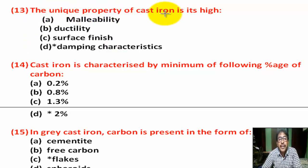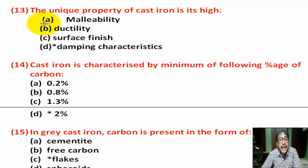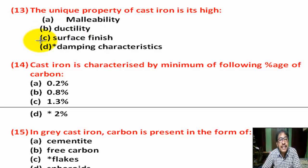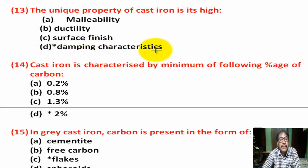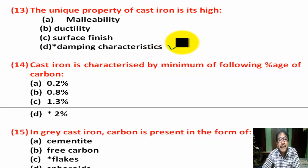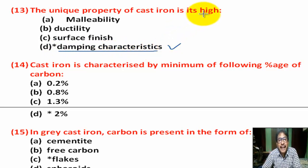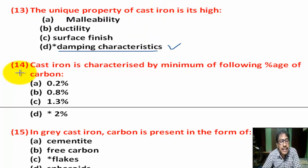Question number 13: The unique property of cast iron is its high — Option A: machinability. Option B: ductility. Option C: surface finish. Option D: damping characteristics. Correct answer is Option D — damping characteristics. Cast iron has high damping characteristics.